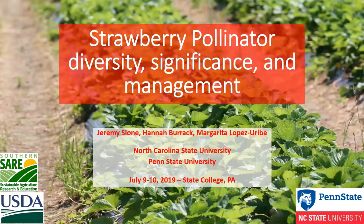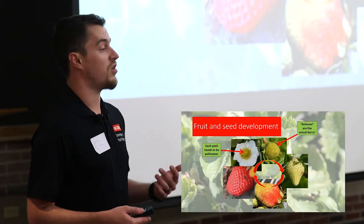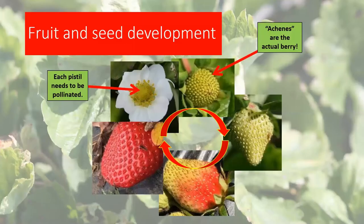Strawberries require complete pollination in order to develop into larger, more symmetrical fruits. Complete pollination means that the more receptive center part of the flower requires individual pollination events, and each event turns into what we think of as the seeds on the outside of a berry. Rather than seeds, those are actually the berry itself — they're called achenes.